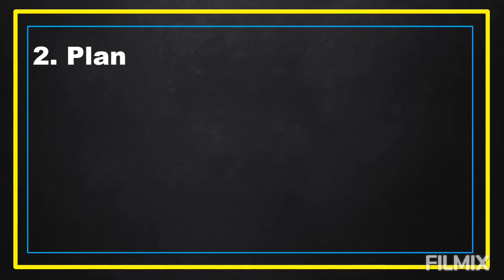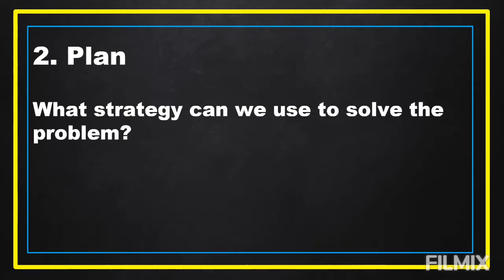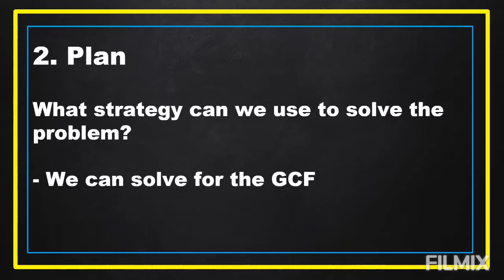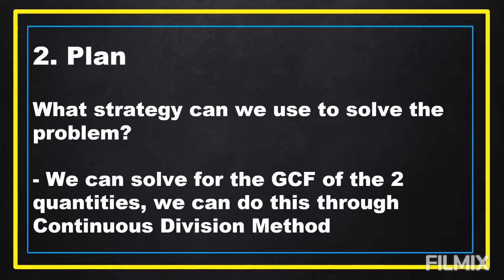The next step is we're going to plan. Under planning, we should know what strategy or operation can be used to solve the problem. In our problem, we can solve for the GCF of the two quantities. We can do this through the continuous division method.